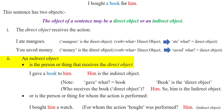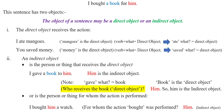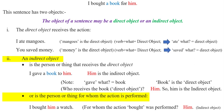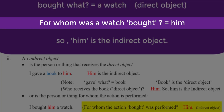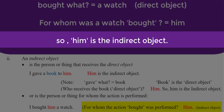An indirect object is the person or thing that receives the direct object. 'I gave a book to him.' What is the direct object? Gave what? A book. So the person who receives the book will be the indirect object. Who receives the book? Him. So him is the indirect object. An indirect object is the person or thing for whom the action is being performed. 'I bought him a watch.' Bought what? A watch — a watch is the direct object. For whom was the action performed? For him. So him is the indirect object.